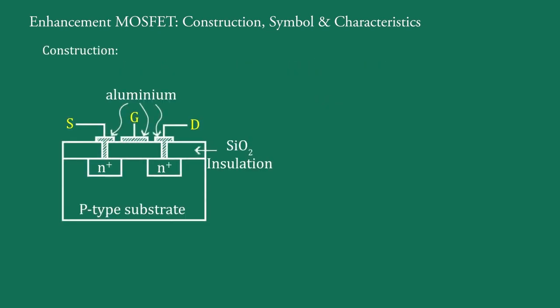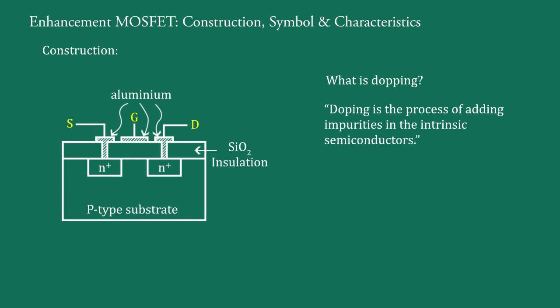This figure shows the construction of an N-channel enhancement MOSFET. It consists of a lightly doped P-channel substrate into which two heavily doped N-plus regions are diffused. The doping is the process of adding impurities in the intrinsic semiconductors.